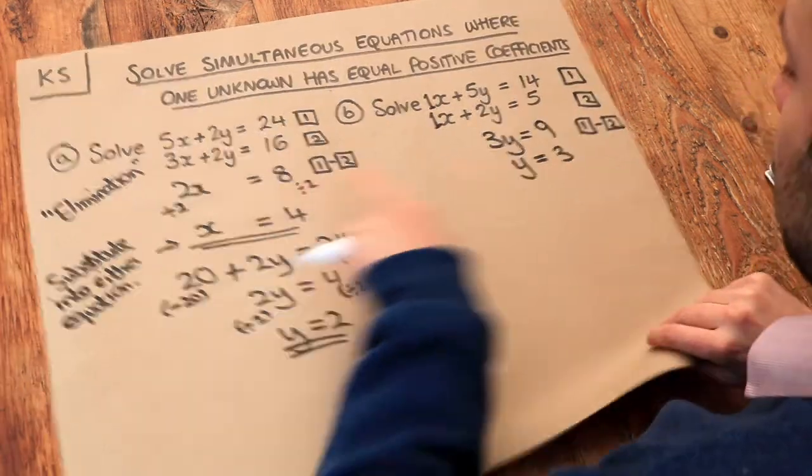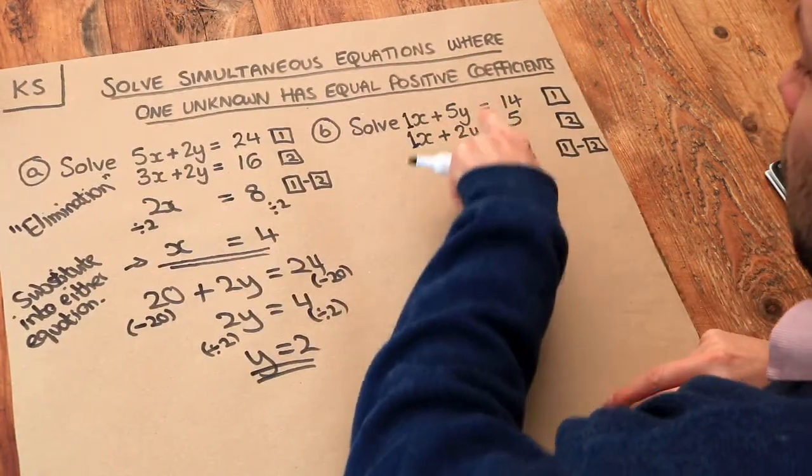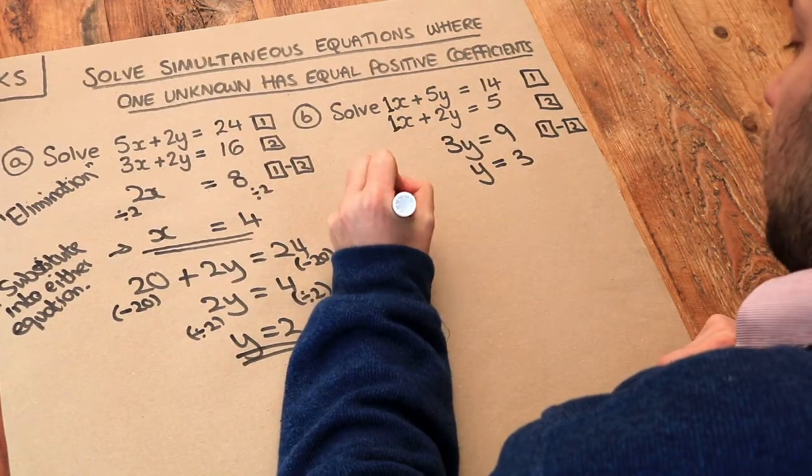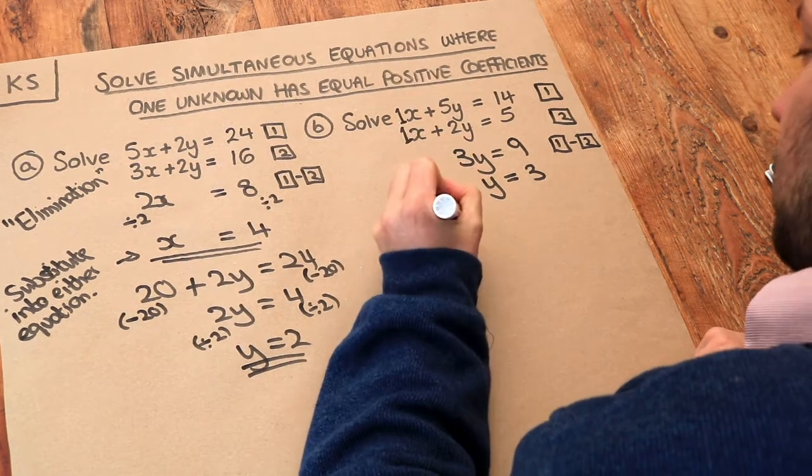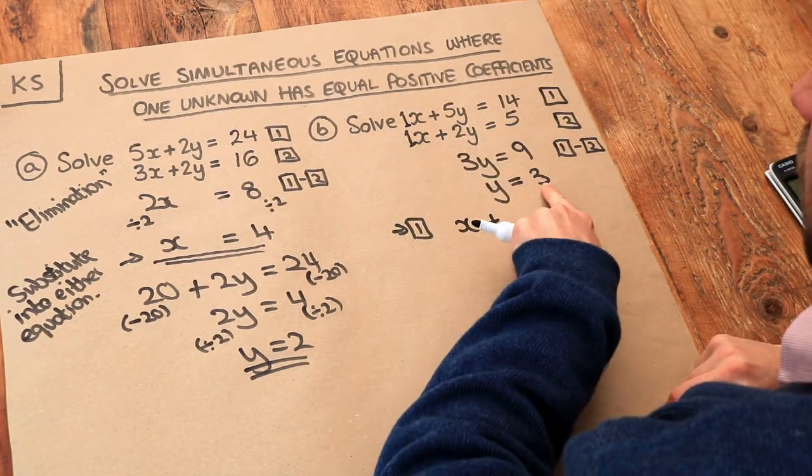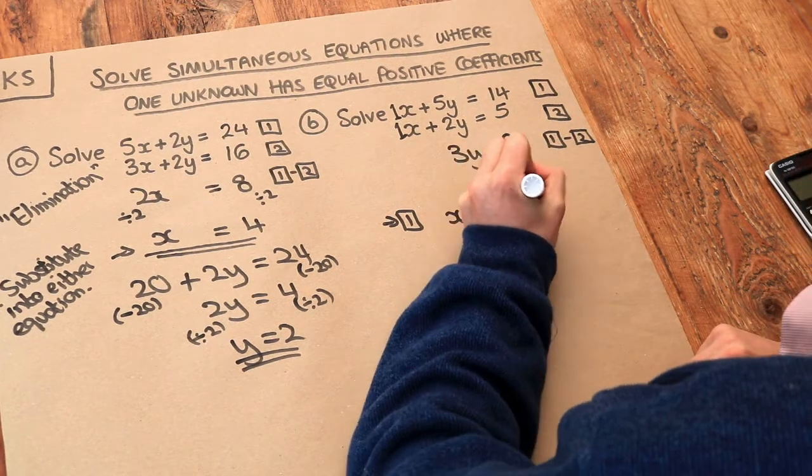And again we just substitute that value of y into either equation, the first or the second, it doesn't matter. So if I substitute into equation 1 I'm going to get x plus 5 times y. 5 times 3 is 15, equals 14.